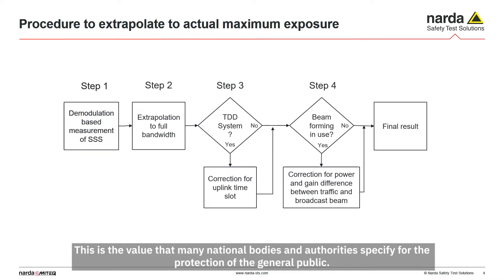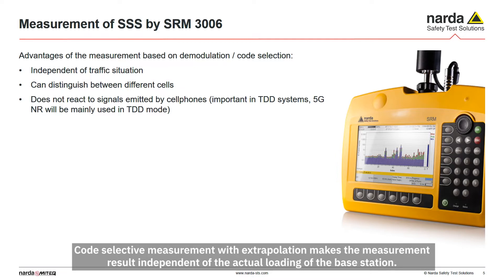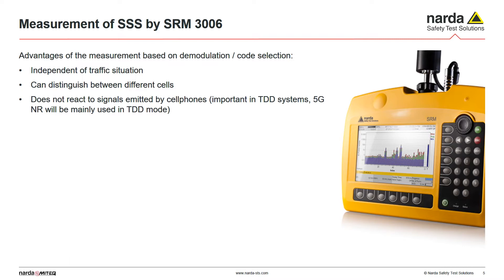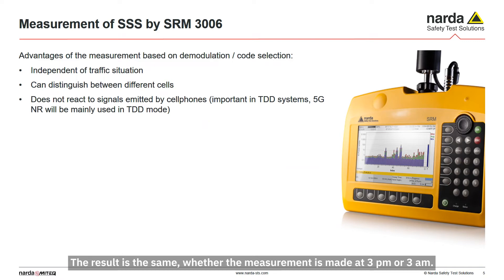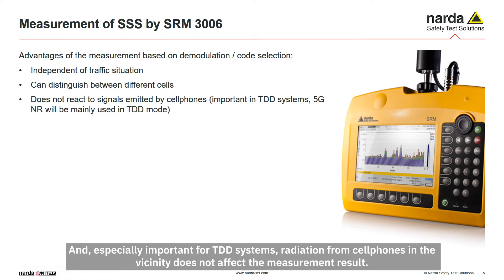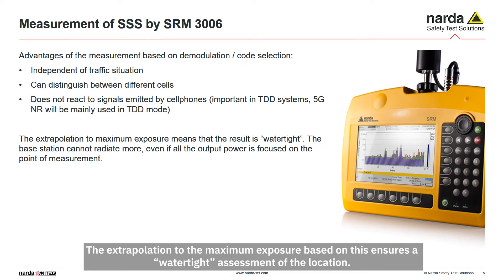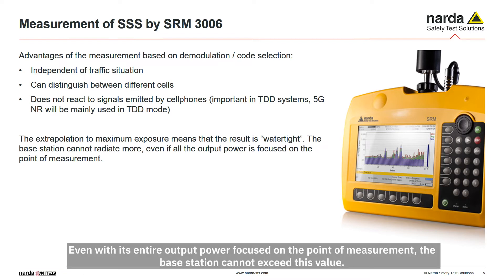This is a value that many national bodies and authorities specify for the protection of the general public. Code-selective measurement with extrapolation makes a measurement result independent of the actual loading of the base station — the result is the same whether the measurement is made at 3 p.m. or 3 a.m. It also makes it possible to separately evaluate every single cell and every segment it contains. Especially important for TDD systems, radiation from cell phones in the vicinity does not affect the measurement result, even though they transmit in the same frequency band. The extrapolation to the maximum exposure ensures a watertight assessment of the location — even with its entire output power focused on the point of measurement, the base station cannot exceed this value.